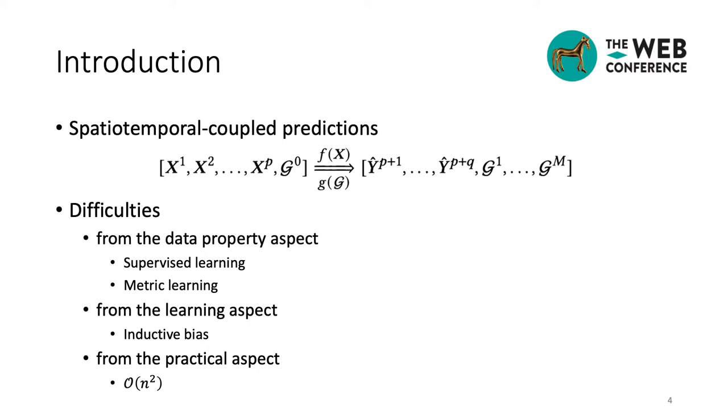Secondly, from the learning aspect, because we want to learn spatial inference and temporal prediction jointly, both sides of the model influence each other compactly. As a result, without effective inductive bias, the model is easy to overfit the noises and the learning procedure may become unstable, especially during the parameter initialization stage.